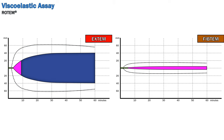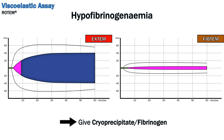For the next pattern, there is hardly any lysis, but the amplitude of both EXTEM and FIBTEM is decreased, disproportionately so on the FIBTEM. From the FIBTEM, you know that the fibrinogen is inadequate, so start with that. The treatment is to give cryoprecipitate or fibrinogen concentrate, probably a large dose. Your institution's massive transfusion protocol will likely have a dosing guide based on viscoelastic assay.